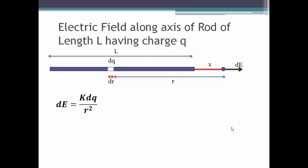Now dE is nothing but k dq by r square that we have already established. Therefore to find the total electric field due to the entire rod, we integrate from x to x plus L, so the entire length is considered.